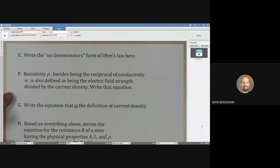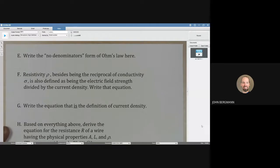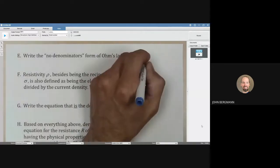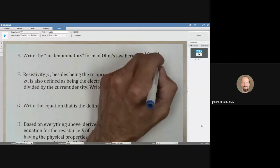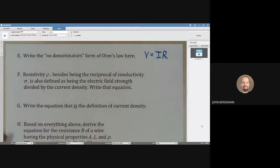Write the no denominators form of Ohm's Law. We haven't really covered Ohm's Law, but perhaps you have in an earlier physics class. Or maybe you've just heard of it. It's very well known. V equals I times R.